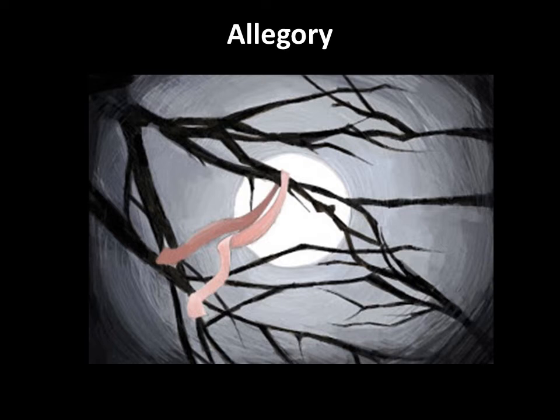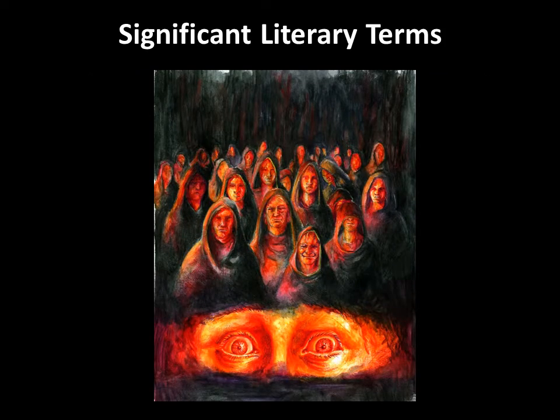The forest path is symbolic of sin or temptation. This is a non-realistic story that mixes features of the supernatural, fantastical, or surrealistic with realistic conventions — such as the traveling companion's staff turning into a serpent, the clouds mysteriously moving across the sky without any wind, and people flying on broomsticks — along with what seems like a fairly realistic story. The setting is in and outside of Salem, Massachusetts, during the Puritan times.